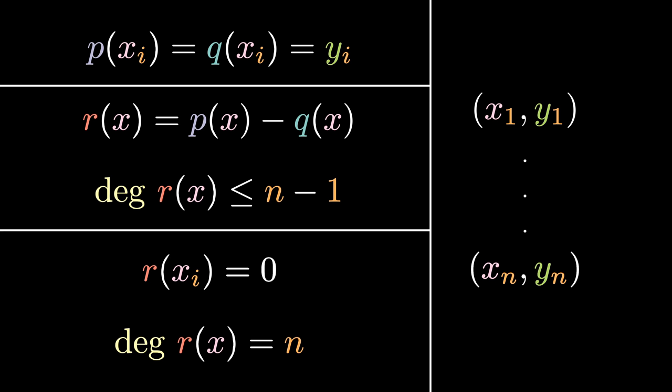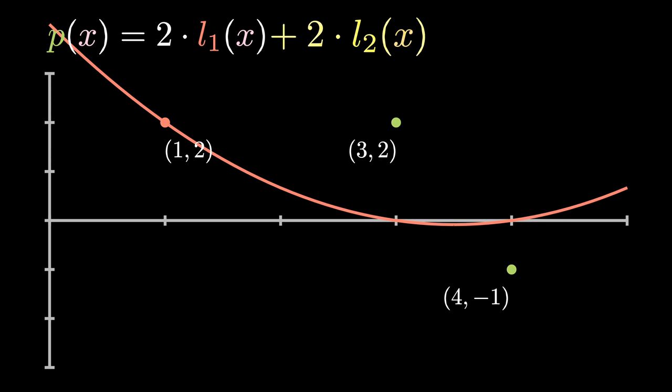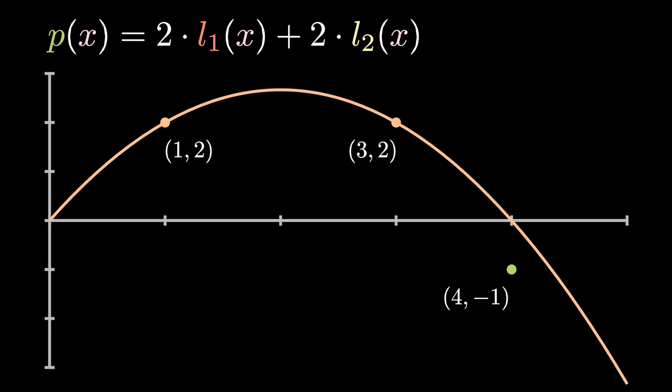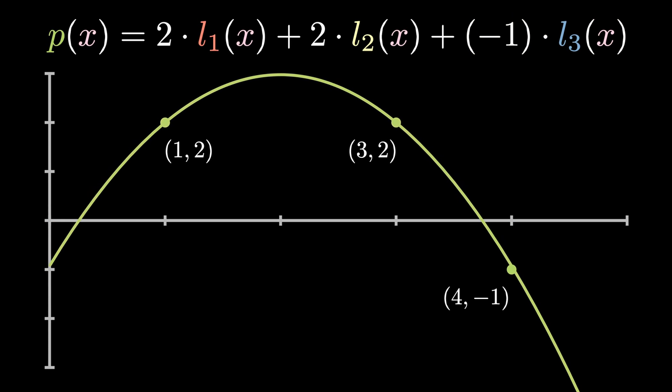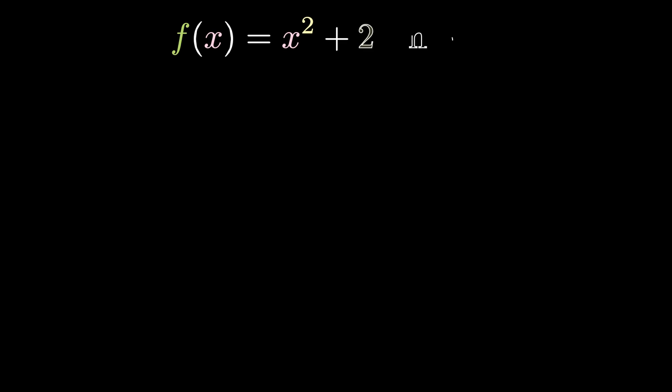The key fact that brings modular arithmetic and Lagrange interpolation together is that we can actually perform Lagrange interpolation using modular arithmetic. Given that our setup for Lagrange interpolation only requires addition, subtraction, multiplication, and division, and since we also know that they follow the same rules as regular arithmetic, we can actually use Lagrange interpolation with modular arithmetic.